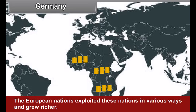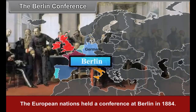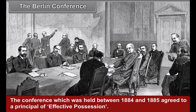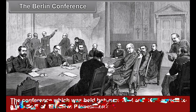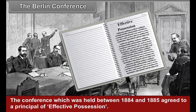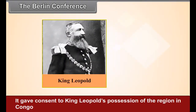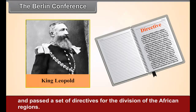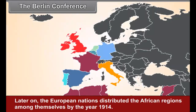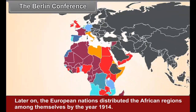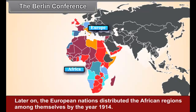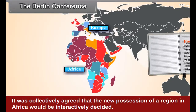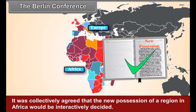The European nations held a conference at Berlin in 1884. The conference, held between 1884 and 1885, agreed to a principle of effective possession. It gave consent to King Leopold's possession of the region in Congo and passed a set of directives for the division of the African regions. Later on, the European nations distributed the African regions among themselves by the year 1914, with a collective agreement that new possession of a region in Africa would be interactively decided.